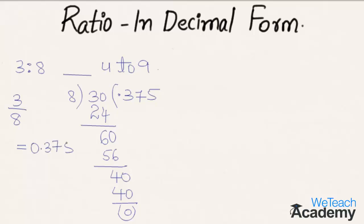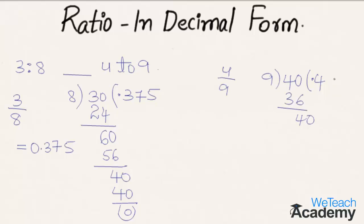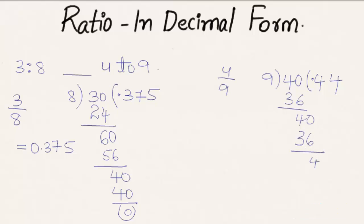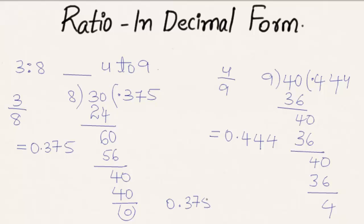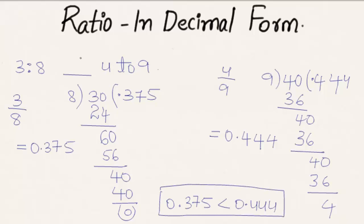Now let us go with the other ratio: 4 to 9. As 4 is not divisible by 9, we write a decimal point and add 0 to get 40. 9 times 4 is 36, and 40 minus 36 is 4. Adding 0 gives 40 again; 9 times 4 is 36, remainder 4. So 4/9 has a repeating decimal. We round and write 0.444. Comparing, 0.375 is less than 0.444, so 3 is to 8 is less than 4 to 9.